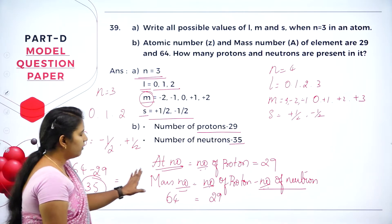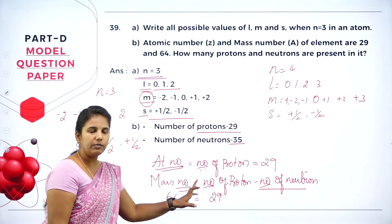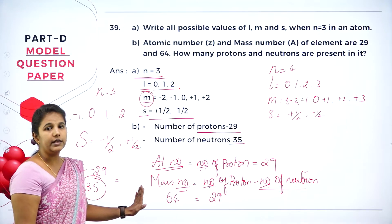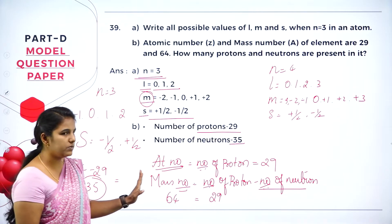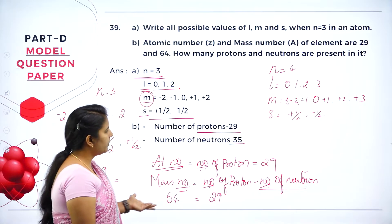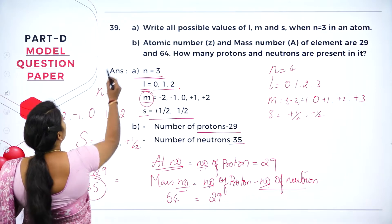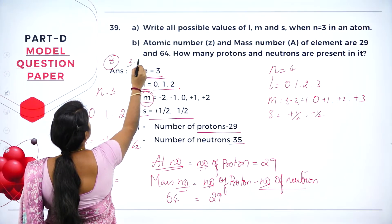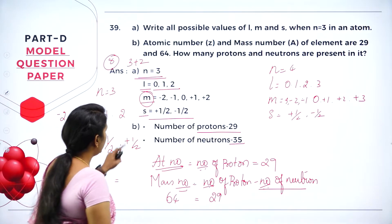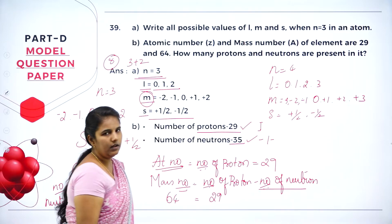Atomic number is the number of protons, whereas mass number is the number of protons plus the number of neutrons. We know the number of protons and the mass number, so by subtracting the number of protons from the mass number, you get the number of neutrons. This is one of the easiest questions — the first part carries 3 marks and the second carries 2 marks. Writing the number of protons gives 1 mark and the number of neutrons gives 1 mark.